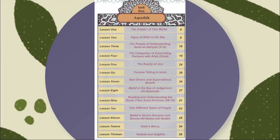In this unit on Akida, we will journey through some enlightening lessons. We'll start by understanding the creator of this magnificent world and appreciating the signs of Allah in the sky and his creation around us. We'll delve into the concept of Surah Tajjati, exploring our origin and the interconnectedness of all humanity, and reflect on the blessings and mercy of Allah in our lives.